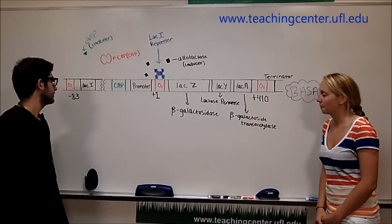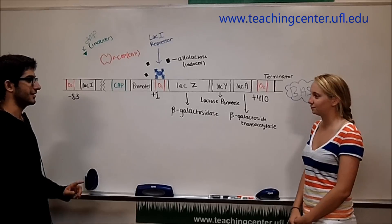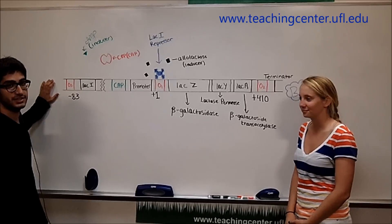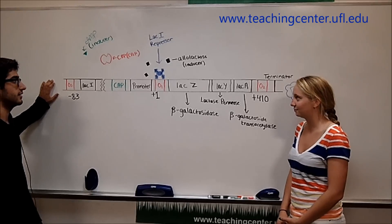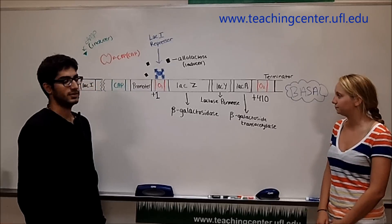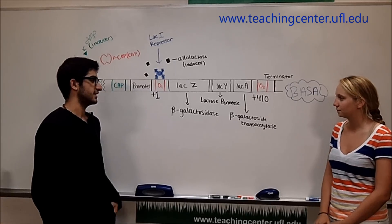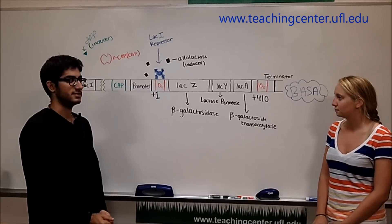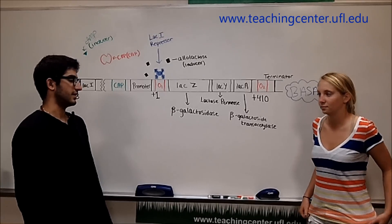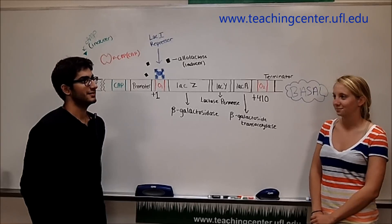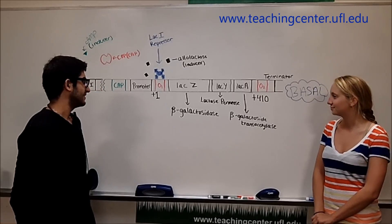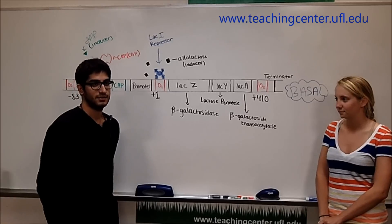First, the genes involved in the lac operon. The first one being lac I, which is the gene that encodes for the lac repressor. The second is the lac Z gene, which encodes for beta-galactosidase. Beta-galactosidase has two really important functions: the first being the conversion of lactose into galactose and glucose, and the second being the conversion of lactose to allolactose.